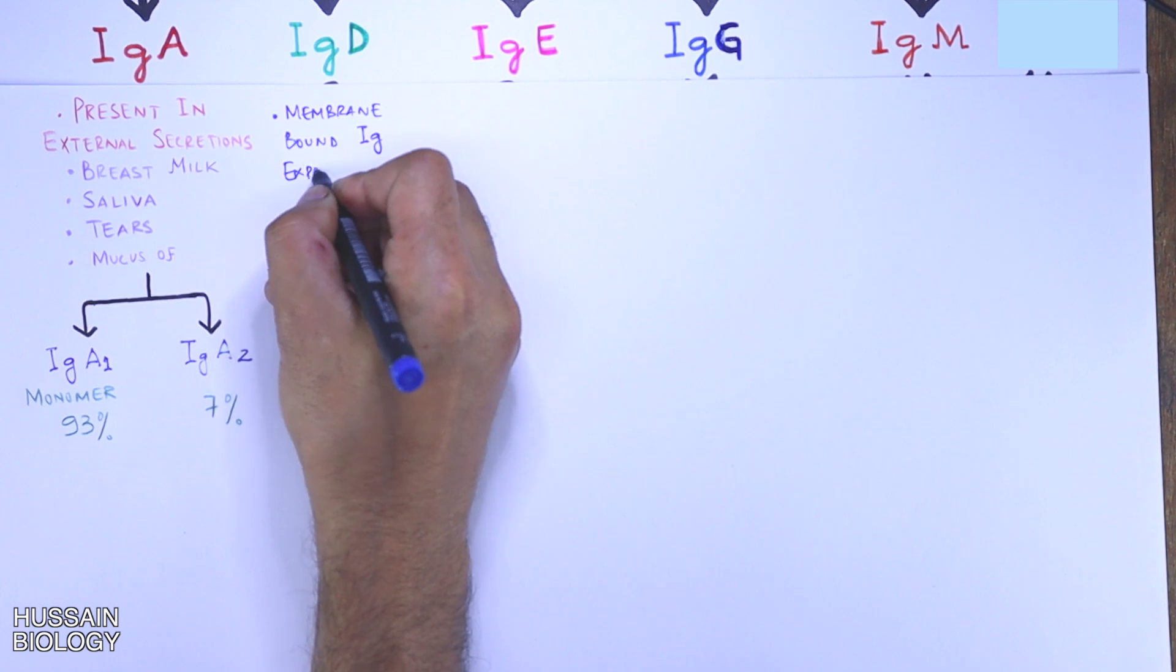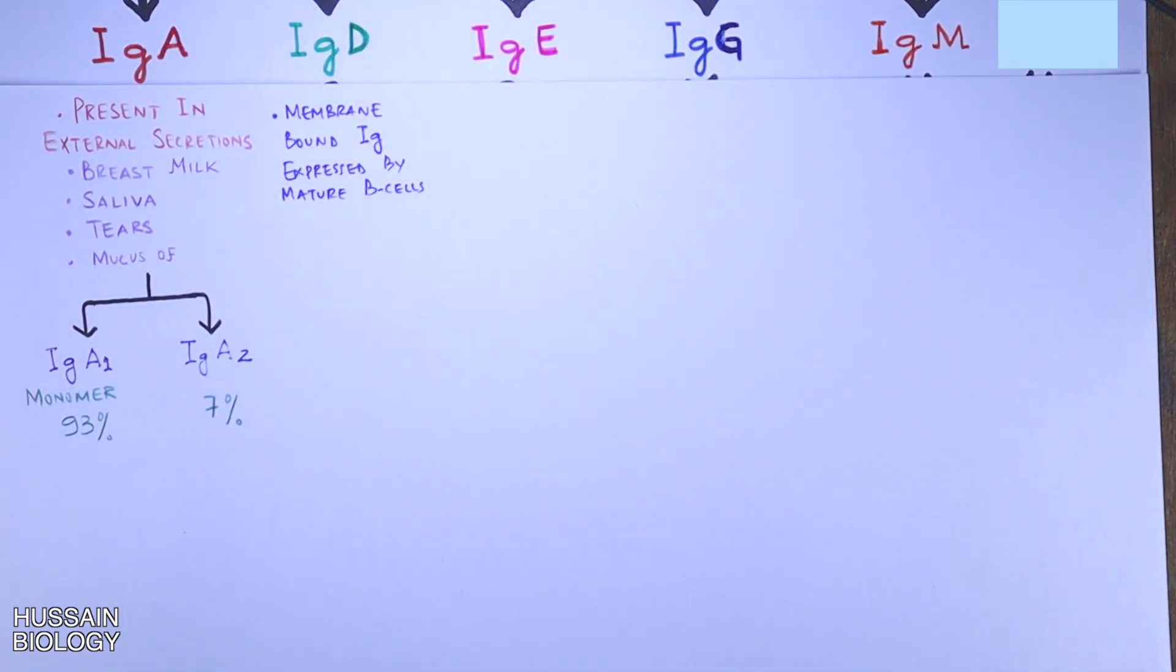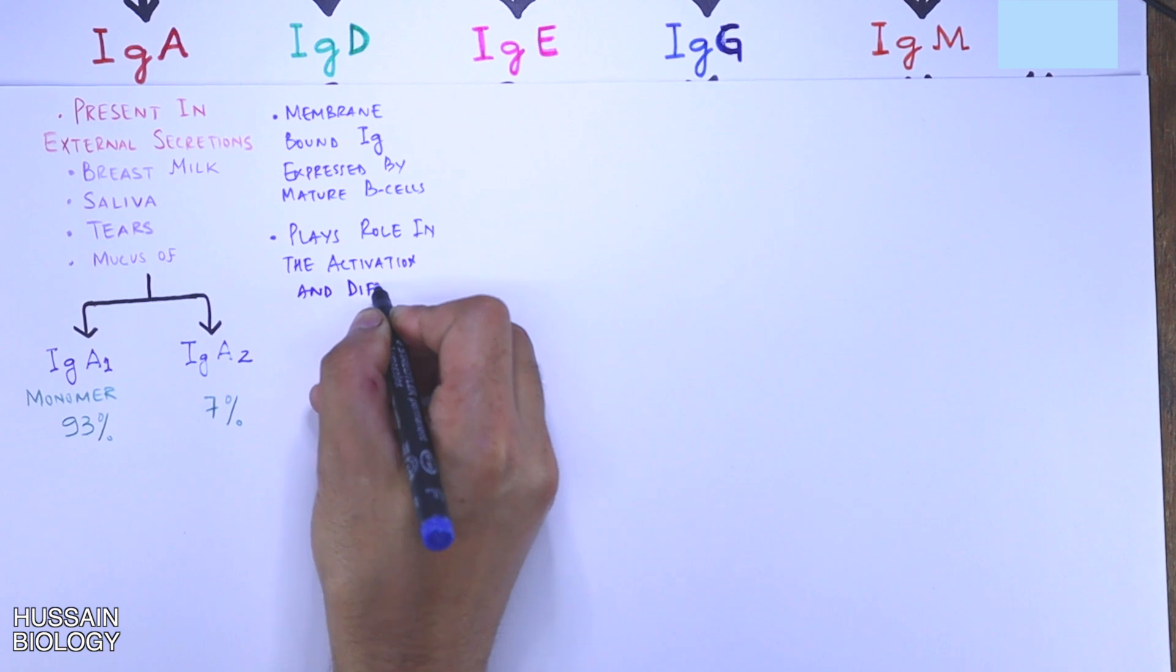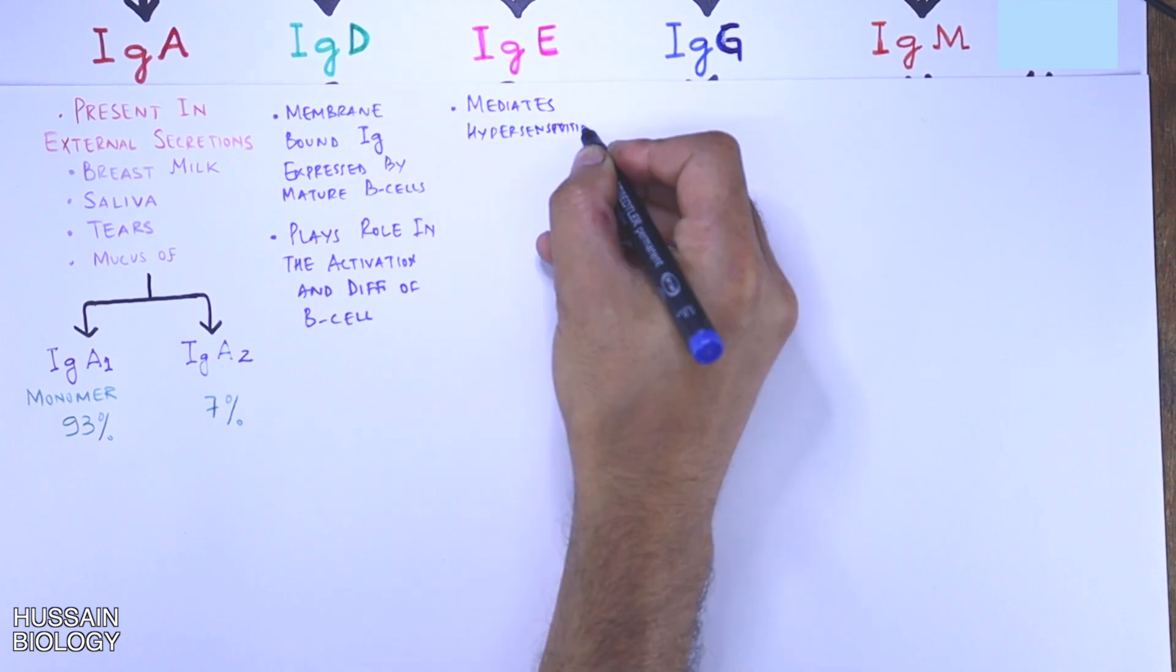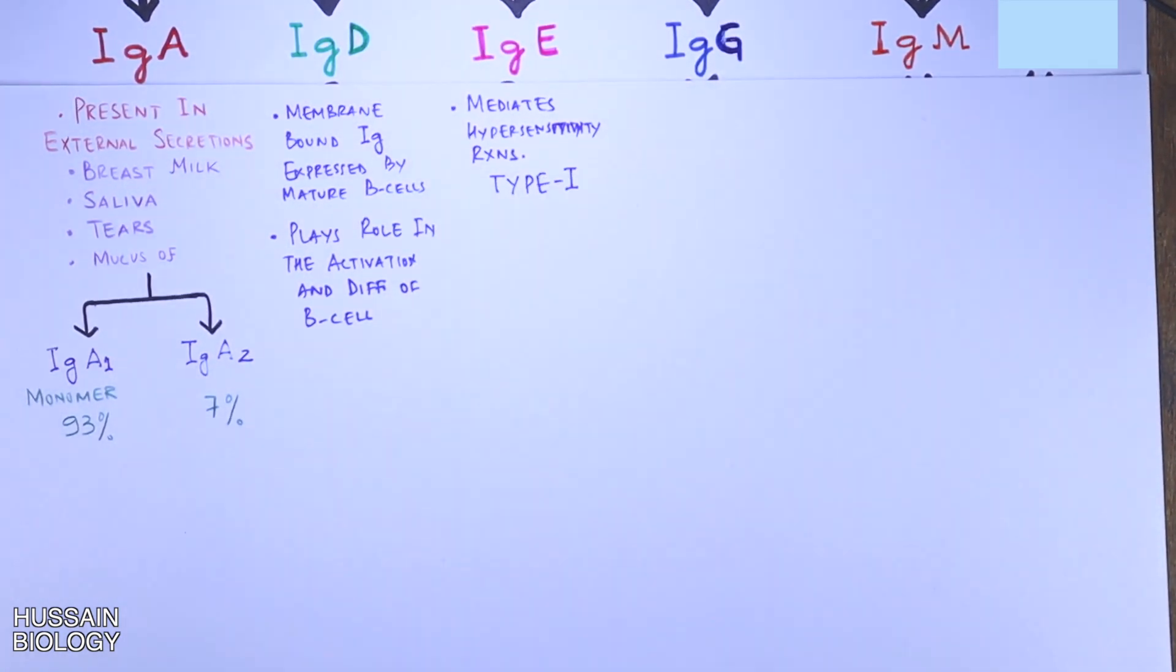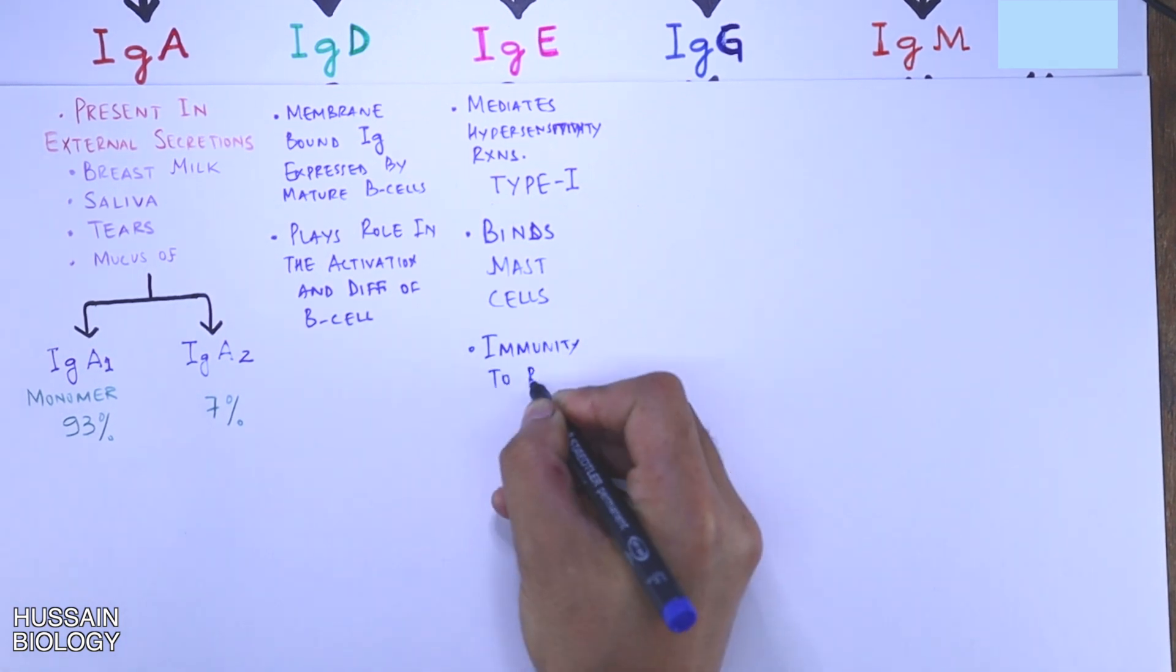Then we have IgD which is membrane-bound immunoglobulin which is expressed by mature B cells. It plays a role in activation and differentiation of B cells. Moving towards IgE antibody, it mediates the hypersensitivity reactions, most specifically the type 1 reactions. It also binds mast cells and provides immunity towards parasites.